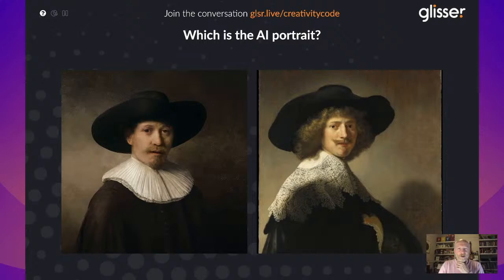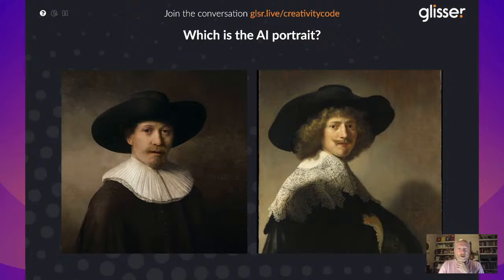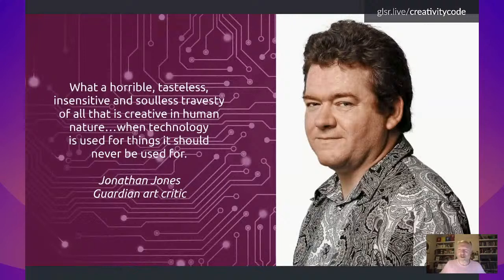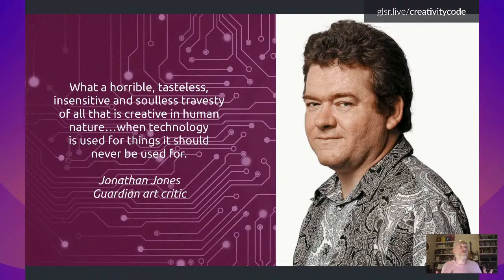Some people were angry about this, asking: we have wonderful Rembrandts — why do we need AI making more? Jonathan Jones, the art critic in The Guardian who hates anything to do with AI and art, wrote: 'What a horrible, tasteless, insensitive and soulless travesty of all that's creative in human nature when technology is used for things it never should be used for.' He has a point — if we want AI to be creative, it isn't good enough to just be making more of the same. That's not creativity; that's pastiche.